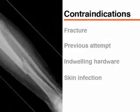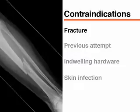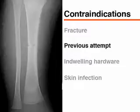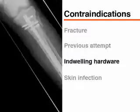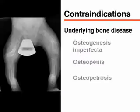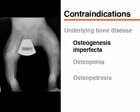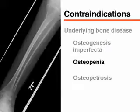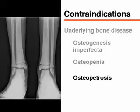Intraosseous access should not be attempted in any bone with a suspected or known fracture, or proximal to a site, or in a bone in which a previous attempt was unsuccessful. Indwelling hardware from a previous orthopedic procedure may prevent successful cannulation in that bone. The presence of skin or soft tissue infection is a relative contraindication. Avoid intraosseous cannulation in patients with underlying bone diseases such as osteogenesis imperfecta or osteopenia, and in patients with osteopetrosis, a condition with very dense bone in which cortical penetration may not be possible.